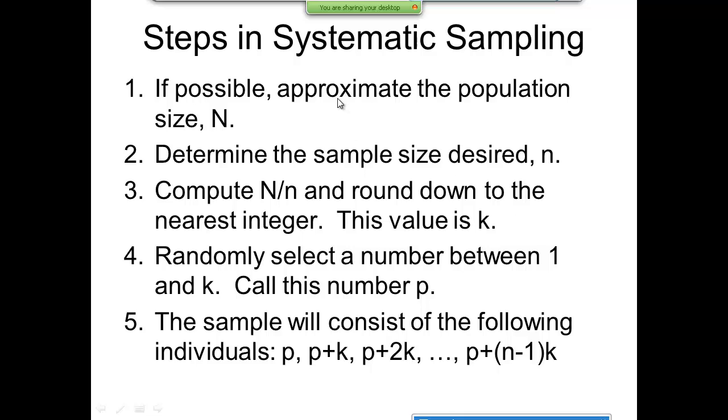Now, steps in systematic sampling. If possible, approximate population size, and that's our capital N. Determine a sample size desired, little n. Compute capital N divided by little n, and round down to the nearest integer. Now, round down means no matter what, you go down. For example, if I had 3.12, we'd go down to 3. If I had 3.98, we'd go down to 3. Round down means you always go down, no matter what. Randomly select a number between 1 and K. I call this number P. So, that's our starting place, like where I start with the third person. And then the sample will consist of the following individuals: P, P plus K, P plus 2K, on our way up, P plus N minus 1 times K.